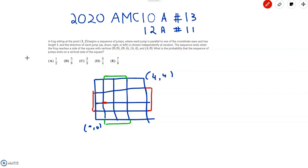The problem reads: A frog sitting at the point (1,2) begins a sequence of jumps, where each jump is parallel to one of the coordinate axes and has length 1, and the direction of each jump—up, down, right, or left—was chosen independently at random. The sequence ends when the frog reaches a side of the square with vertices (0,0), (0,4), (4,4), and (4,0). What is the probability that the sequence of jumps ends on a vertical side of the square?